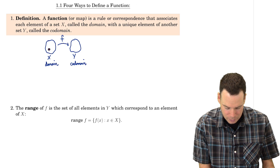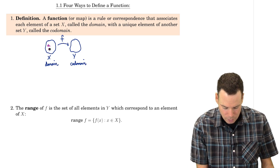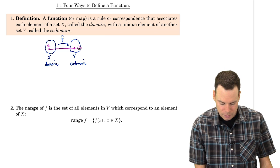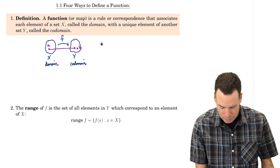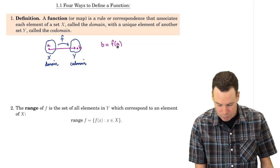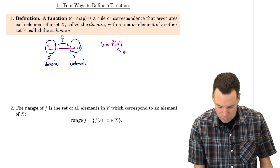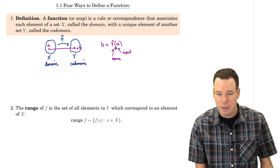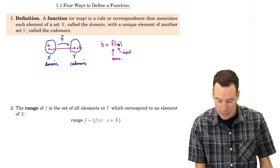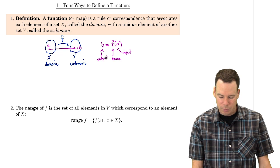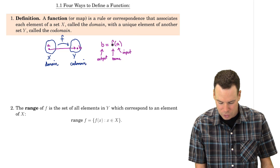Just to recap notation: if we had some element A in our domain and the function takes it to an element B in our co-domain, the notation we use is that B can be written as F of A — our function applied to the input value A. So F(A) is our function name applied to the input from our domain, and it represents the element in the co-domain that A gets mapped to — what we call the output. Here we've written the output as B: input into the function, what comes out is the output.